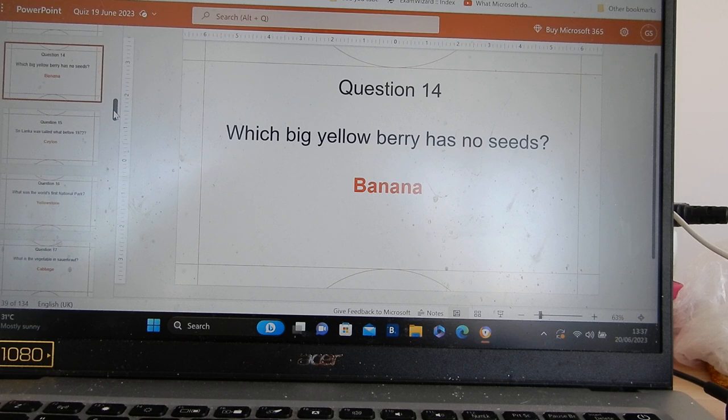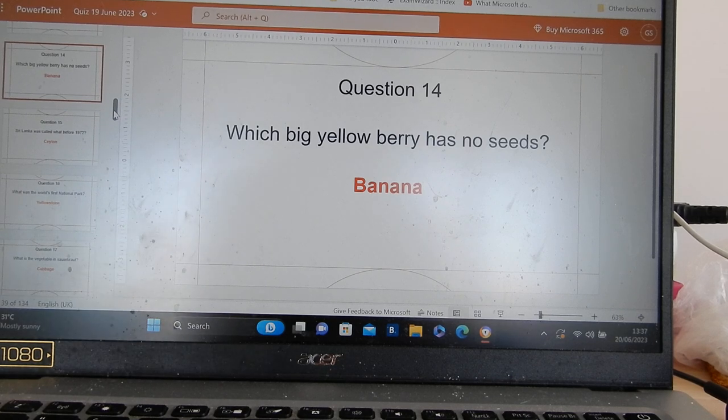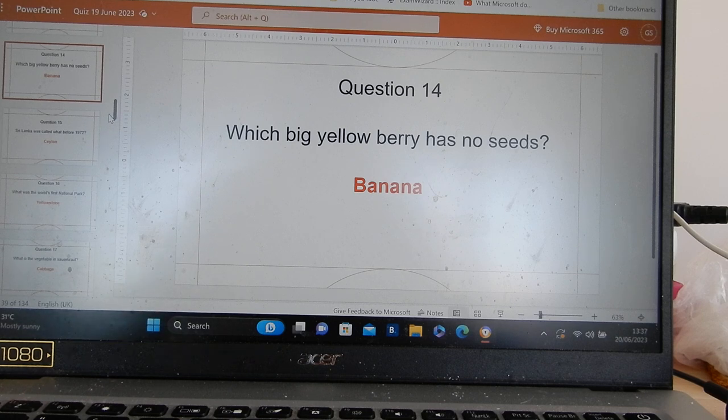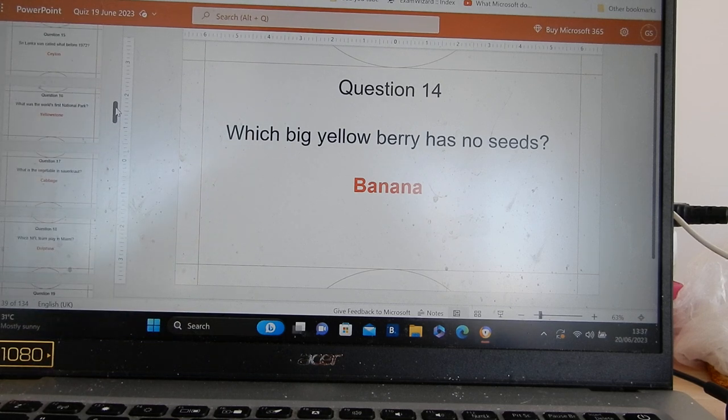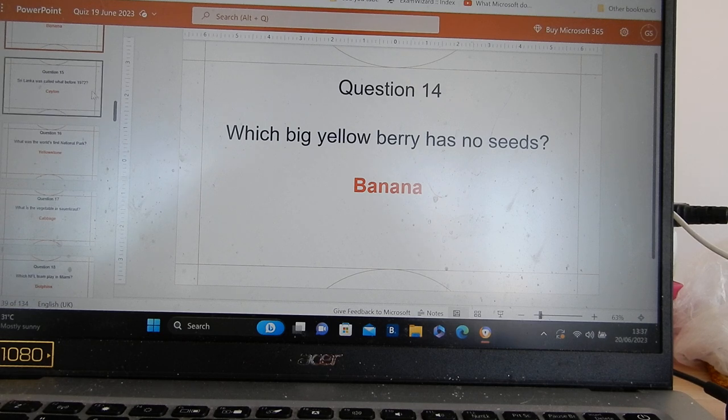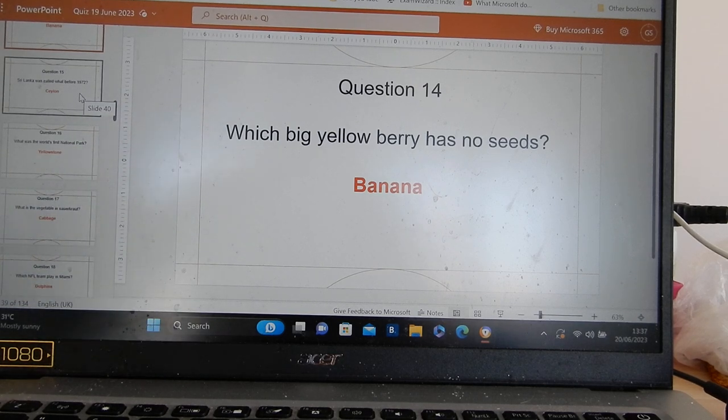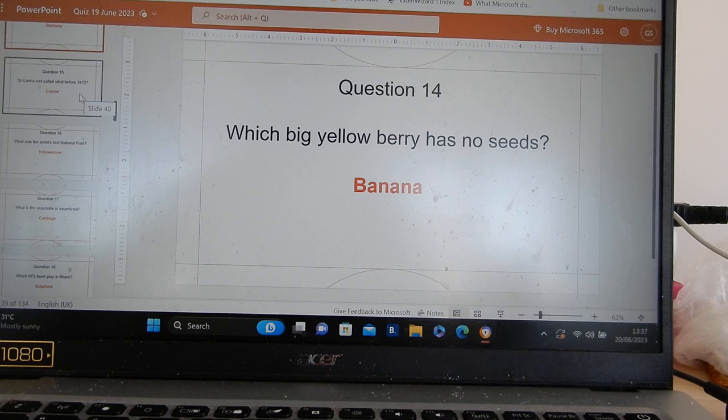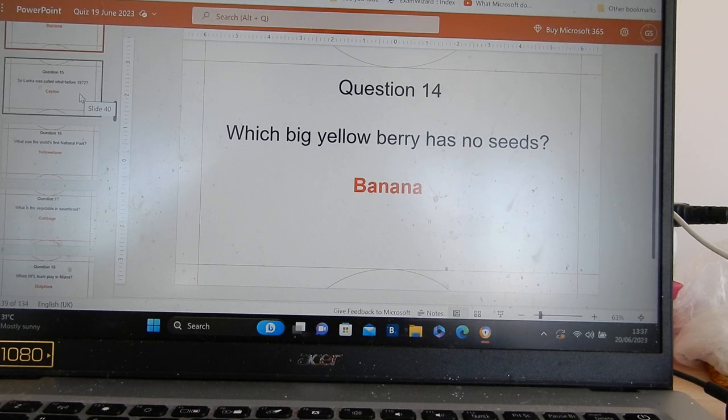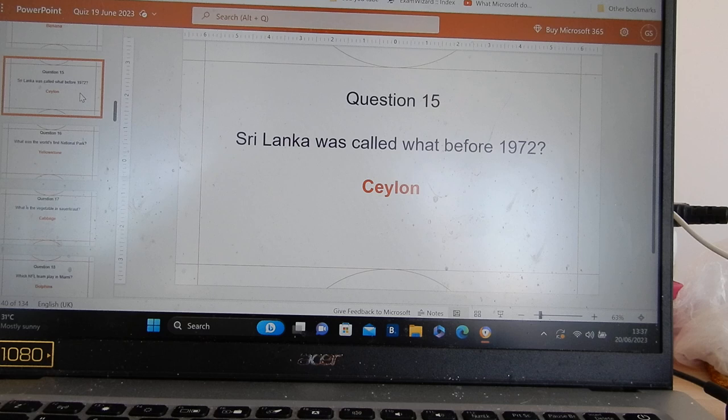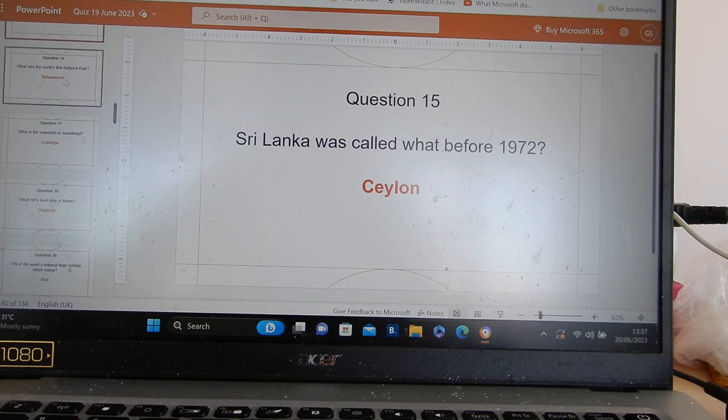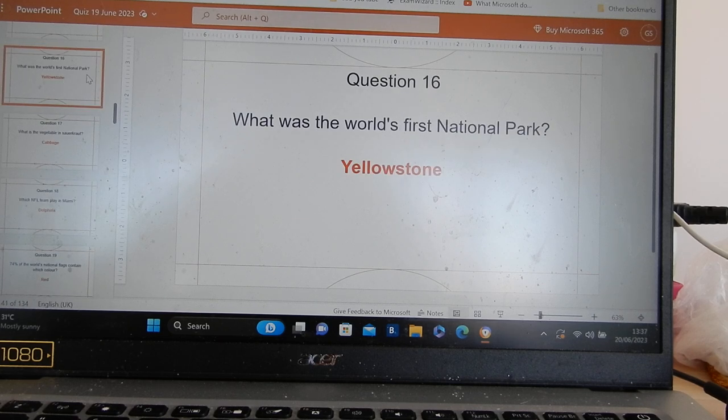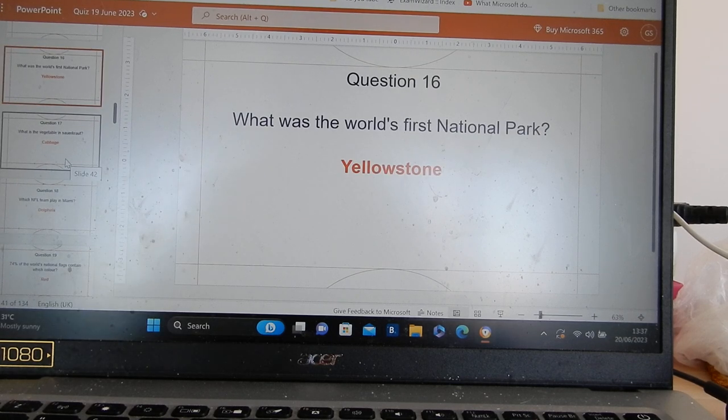Yes. Genetic engineering by farmers. Farmers over 2,000 years use selective breeding to get the seeds out of bananas. It's just the black marks in the banana nowadays. Before 1972, Sri Lanka was called Ceylon.